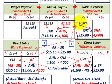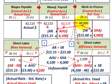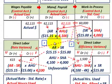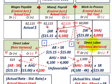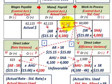Going back to our case: based on standard rate and standard hours allowed, $60,000 versus $62,115 actual cost — the $2,115 difference is split between the direct labor rate variance of $615 and the direct labor efficiency variance of $1,500. Together those total $2,115, which accounts for the entire difference between actual cost and standard cost.